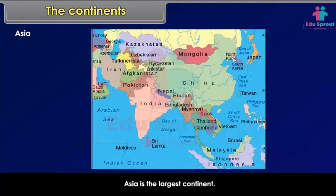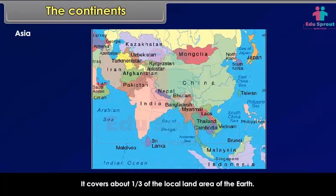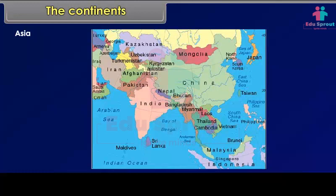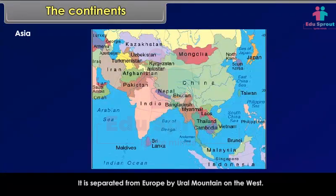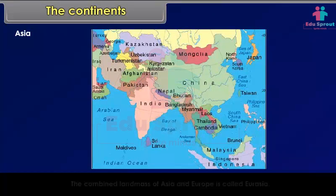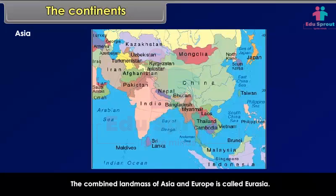Asia is the largest continent. It covers about one-third of the total land area of the Earth. Asia lies in the Eastern Hemisphere. It is separated from Europe by the Ural Mountains on the west. The combined land mass of Asia and Europe is called Eurasia.